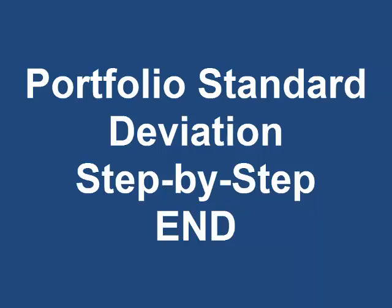Take the square root of the variance and you get the standard deviation: 30.62%. In this video we've gone over the formula for standard deviation of a portfolio step by step, including breaking it into its component parts for easier, hopefully error-free computation. As complex as a portfolio standard deviation formula can appear, when simplified into parts then assembled, it should not present a problem.